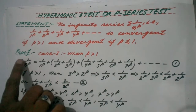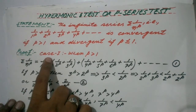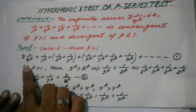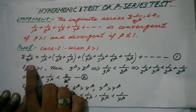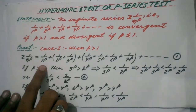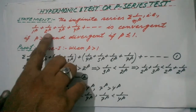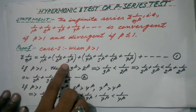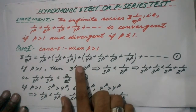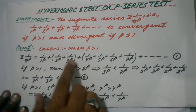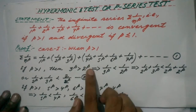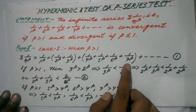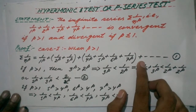Now let us prove Case 1, when p is greater than 1. We can write sigma 1/n^p by keeping the first term aside and grouping the next terms: (1/2^p + 1/3^p) + (1/4^p + 1/5^p + 1/6^p) + ... to infinity. Let this be equation number 1.